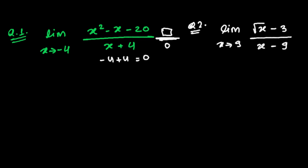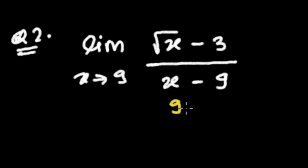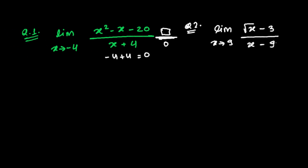Similarly, in the second question, if I insert x = 9 into the denominator, I get 9 - 9 = 0. That is also an indeterminate, undefined form. So we have to work on both expressions to remove the zero from the denominator before substituting the value of x.